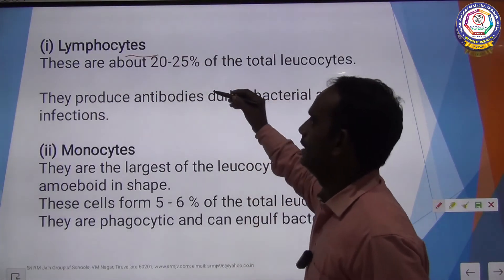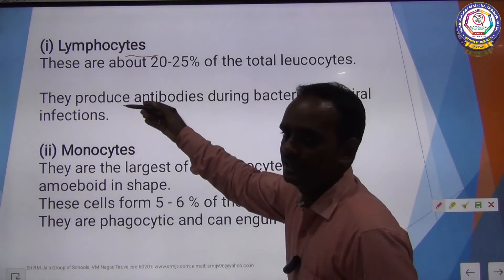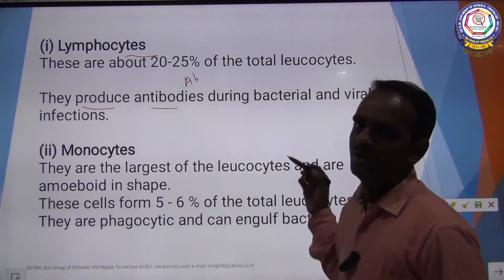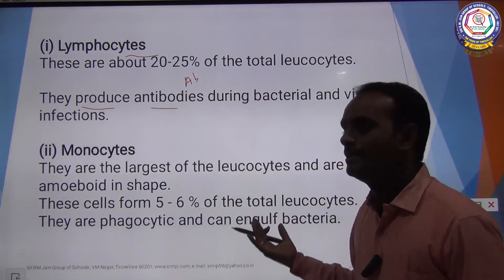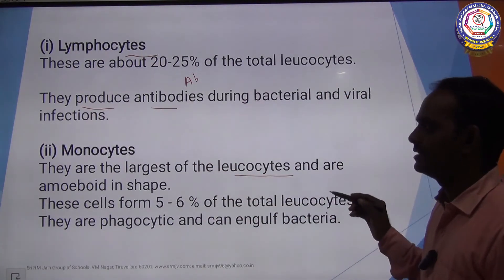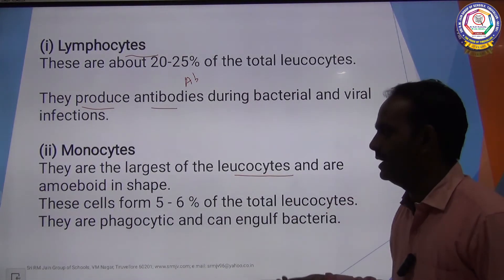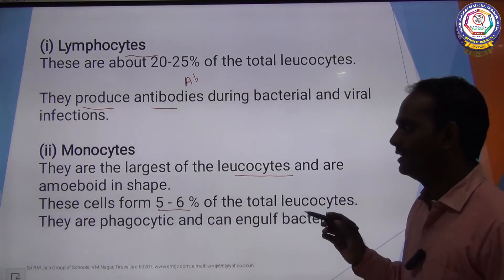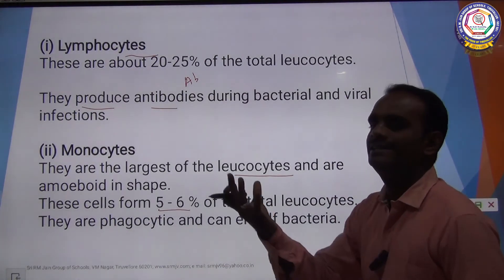Lymphocytes constitute about 20 to 25% of WBC. Lymphocytes produce antibodies that fight against antigens. Monocytes are the largest of leukocytes and have an amoeboid shape. They form 5 to 6% of total WBC and are involved in phagocytosis — engulfing foreign substances.